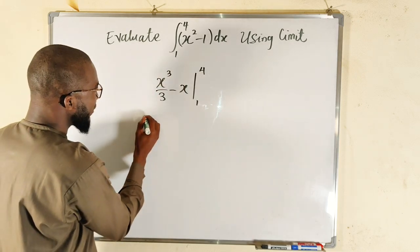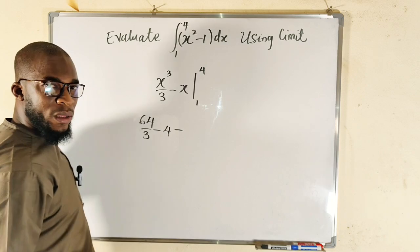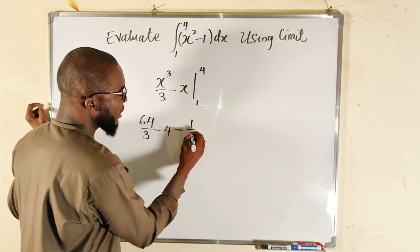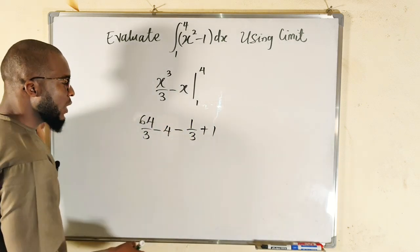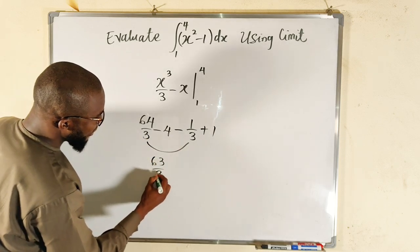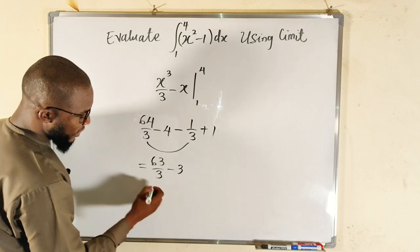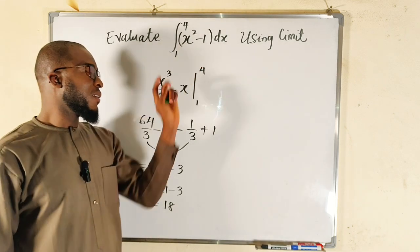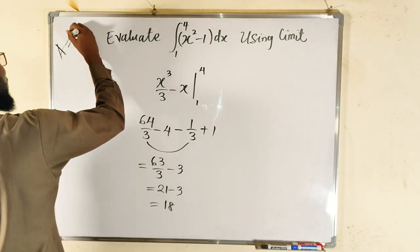Let's substitute the upper limit first — when x is 4, we have 4 to the third power, which is 64, divided by 3, minus 4. Then subtract the lower limit: when x is 1, we have 1 to the third power, which is 1, divided by 3, then minus changes to plus 1. We join these: 63 divided by 3, minus 4 plus 1, giving negative 3. So we have 21 minus 3, which equals 18. This definite integral evaluates to 18 — that is the area.